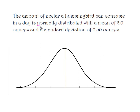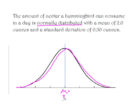Because we have the phrase 'normally distributed,' we know that this consumption of nectar follows a normal curve, where the mean is located dead center and the area above the mean and the area below the mean are the same. We also know that 50% of our data falls above the mean and the other 50% of the data falls below the mean.